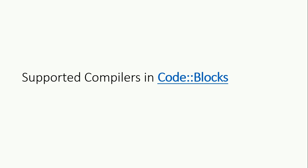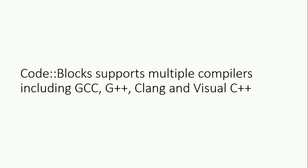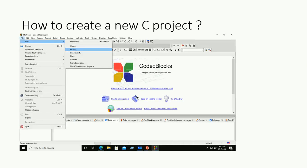Supported compilers in Code Blocks IDE: Code Blocks supports multiple compilers including GCC, G++, Clang, and Visual C++. Now let's look at how to create a new C project.